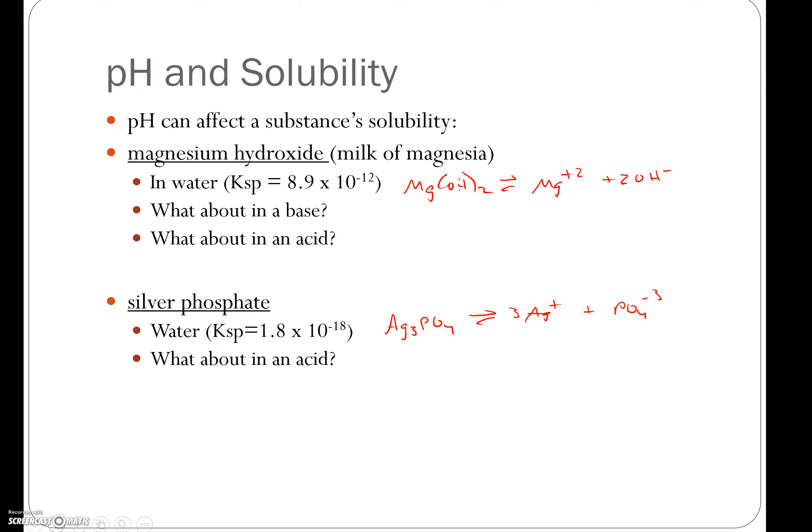Now, if we add an acid to that solution, the hydrogen from the acid is going to react with the phosphate ions to make hydrogen phosphate ions. That, in turn, decreases the phosphate ion concentration, which will shift the equilibrium towards the right and increase the solubility of silver phosphate.